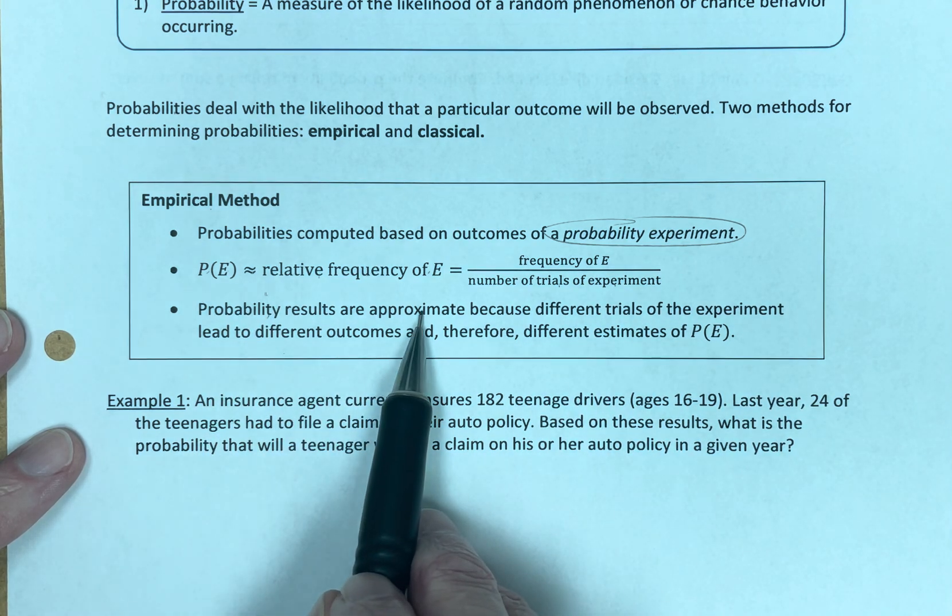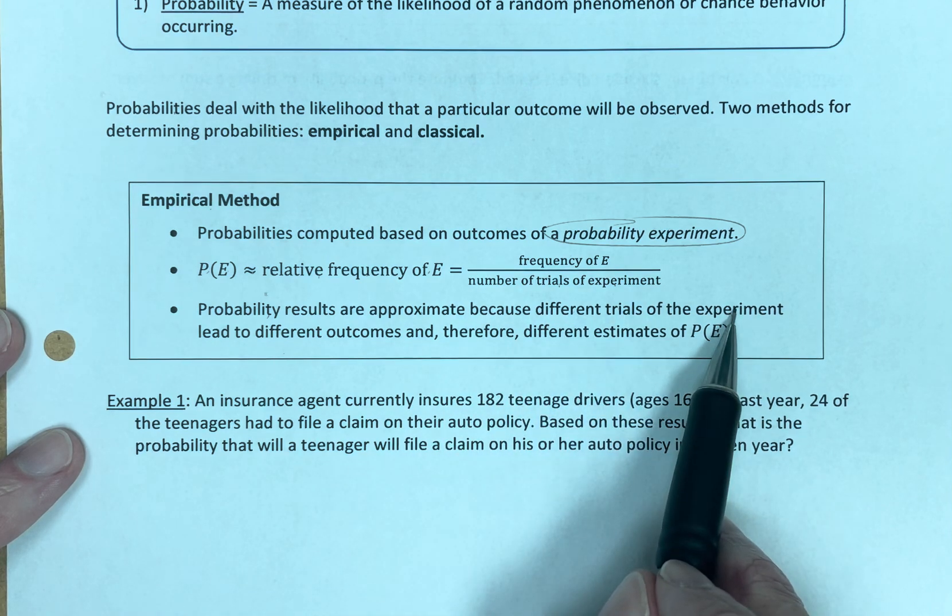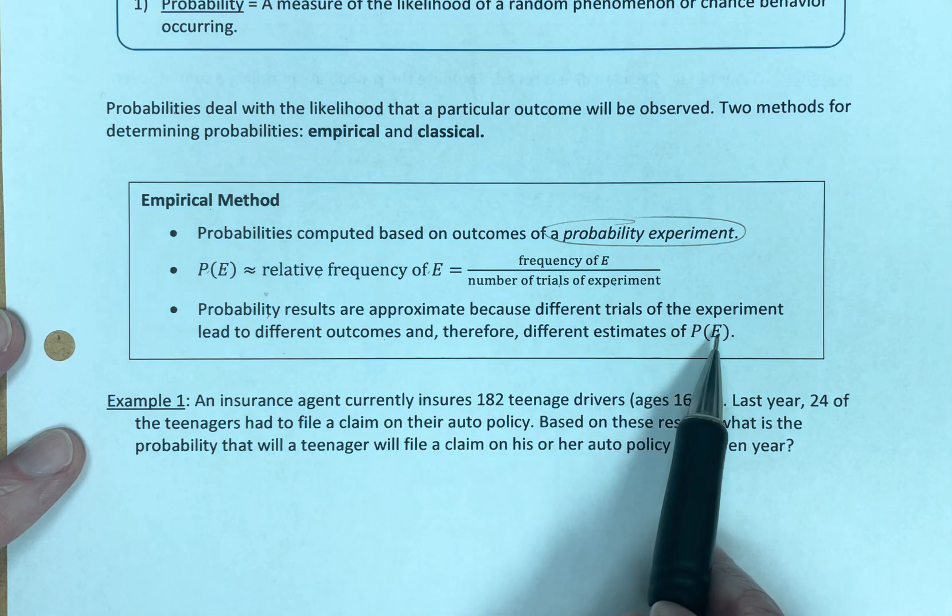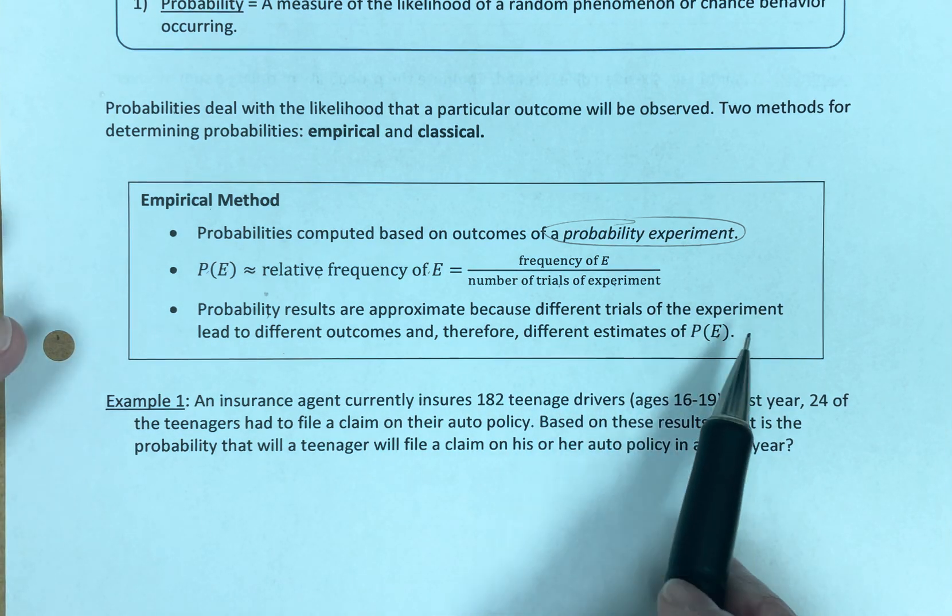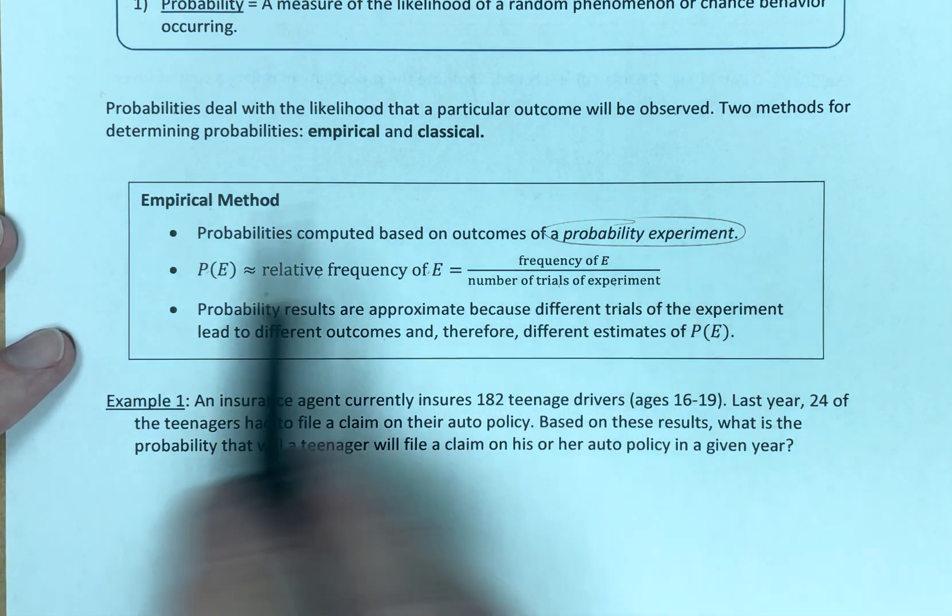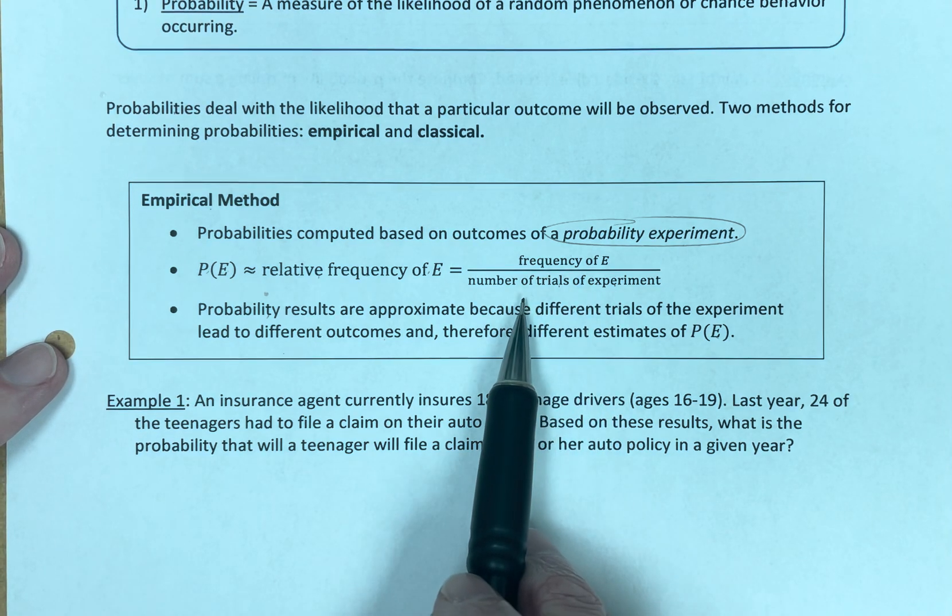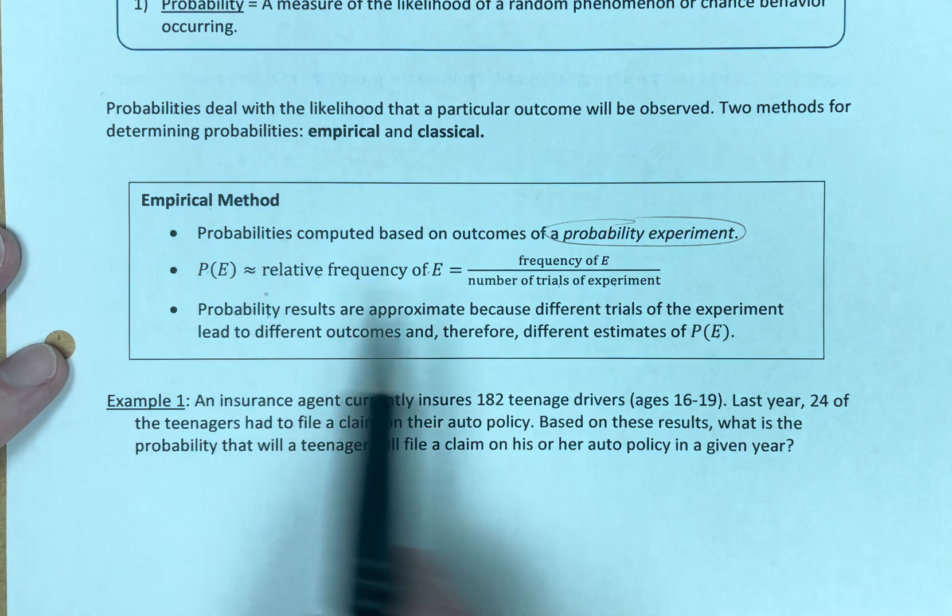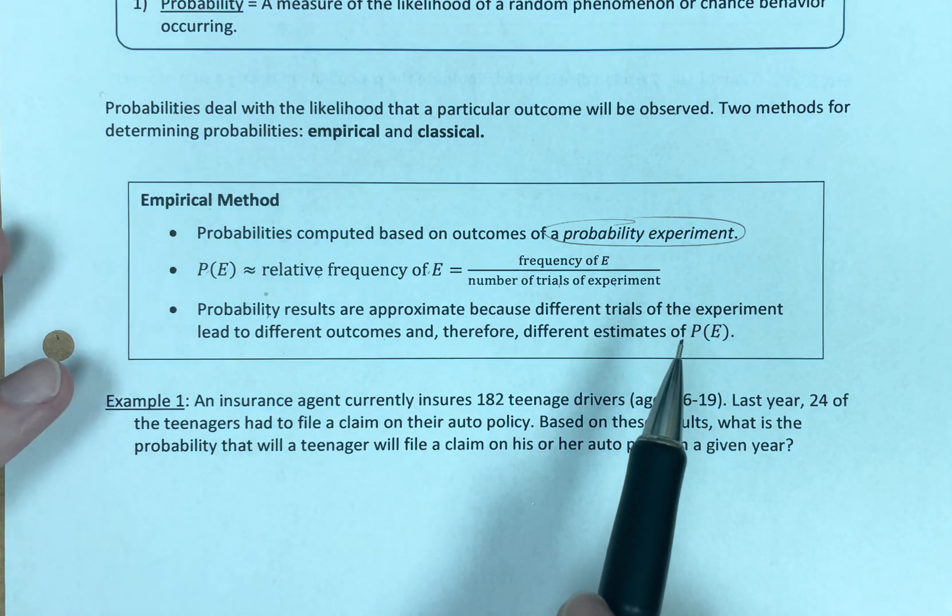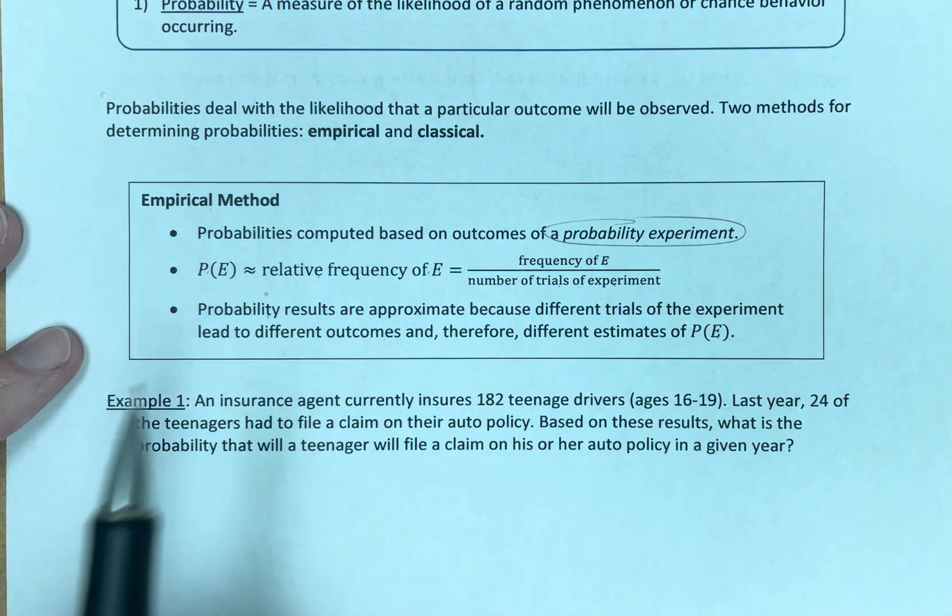Probability results are approximate because if you do different trials of the experiment, they're going to lead to different outcomes and therefore different estimates of the probability of an event. For example, you flip a coin 10 times, you're going to have some number of heads and some number of tails. That's probably going to be different than the next time you flip a coin 10 times. You're going to wind up with probably a different number of heads and tails and therefore slightly different probabilities because you've done a probability experiment.